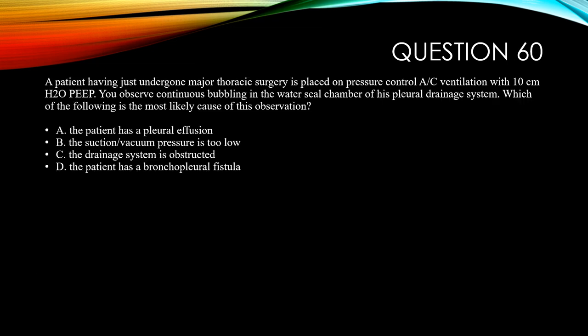Question 60. A patient having just undergone major thoracic surgery is placed on pressure control AC ventilation with 10 centimeters of PEEP. You observe continuous bubbling in the water seal chamber of the pleural drainage system. Which of the following is the most likely cause? A, the patient has a pleural effusion. B, the suction vacuum pressure is too low. C, the drainage system is obstructed. And D, the patient has a bronchopleural fistula.